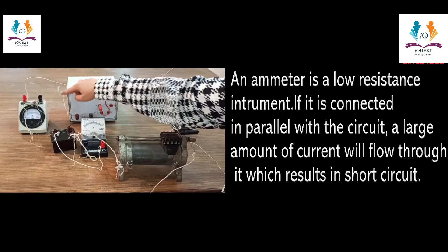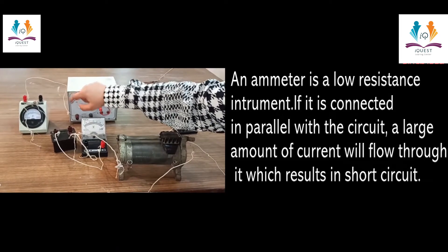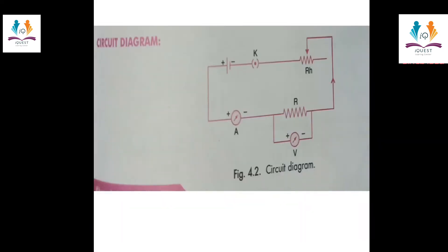The ammeter is always connected in series. In the circuit diagram, we join the positive terminal of the battery with the positive terminal of the ammeter. The negative terminal of the ammeter is joined with one terminal of the resistor.